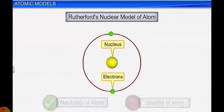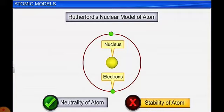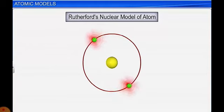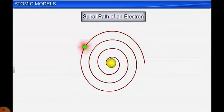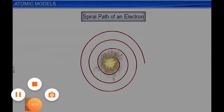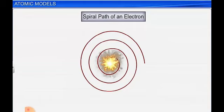However, Rutherford's model could not explain the stability of an atom. Since electrons are charged particles, whenever a charged particle undergoes circular motion, energy is emitted. As a result, the electron loses energy and travels in a spiral path, eventually collapsing into the nucleus, causing instability. This is the basic drawback of Rutherford's atomic model. In this module, we have discussed two models: JJ Thomson's model and Rutherford's nuclear model.